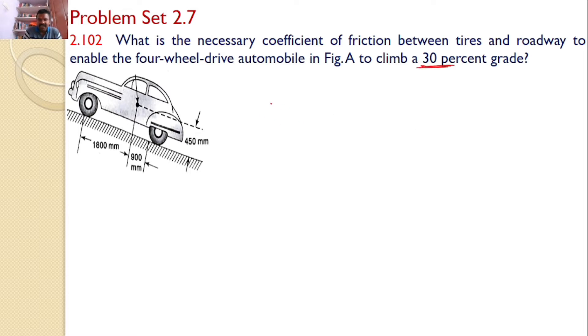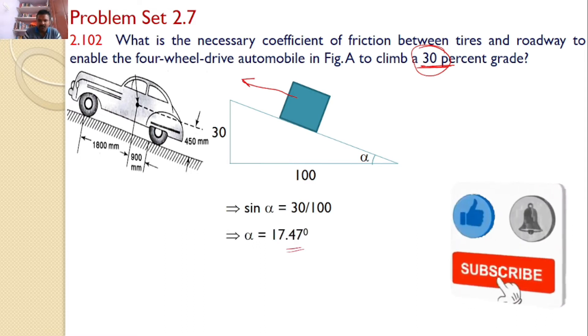That means the inclination is given as 30%. Now look at this diagram. This is the car, an inclined plane, whose angle is given as 30%. Now let this angle be alpha. First, let us find this value alpha. Sin alpha is equal to 30 by 100 and alpha is equal to 17.4 degrees.